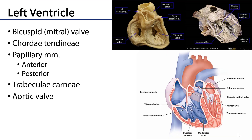The left ventricle is going to receive blood from the bicuspid or mitral valve, recalling that it has anterior and posterior cusps.